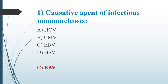Infectious mononucleosis is also known as kissing syndrome or glandular fever. The Epstein-Barr virus is also known as human herpes virus 4, which is a double-stranded DNA virus. The disease spreads through saliva. Presence of atypical lymphocytes in blood is an important diagnostic feature. The Paul-Bunnell test, which is a heterophile agglutination test, is used for detection of infectious mononucleosis.